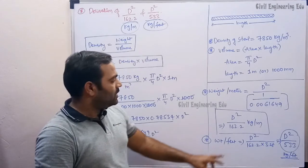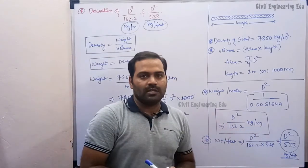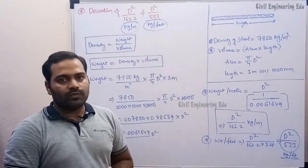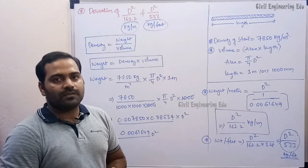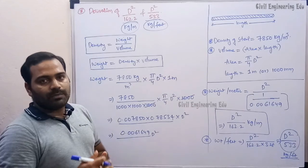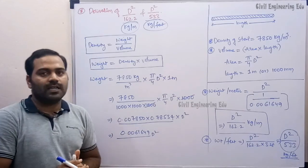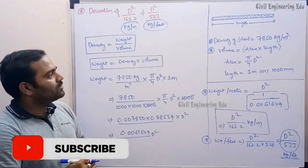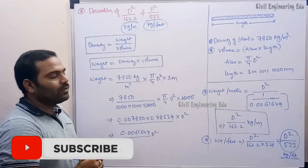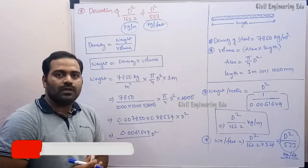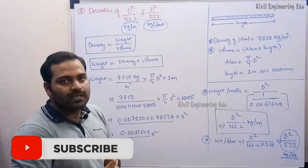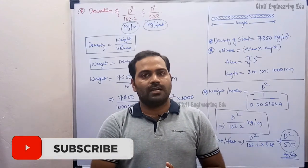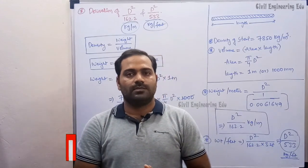So these are the two formulas — D² / 162.2 for kg per meter and D² / 533 for kg per feet — used for the calculation of weight of steel bars. I hope you understood. If you liked the video, hit the like button. If you are new to the channel, subscribe and follow. Thank you.